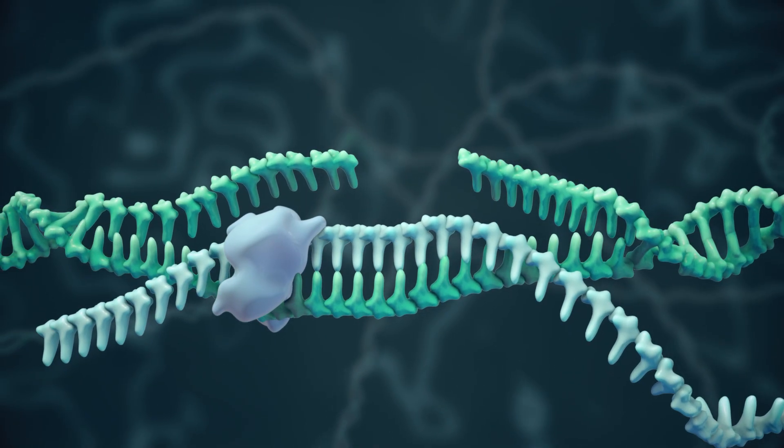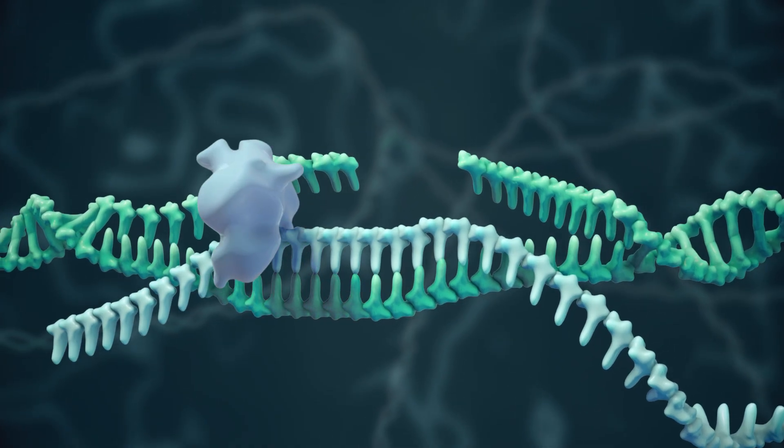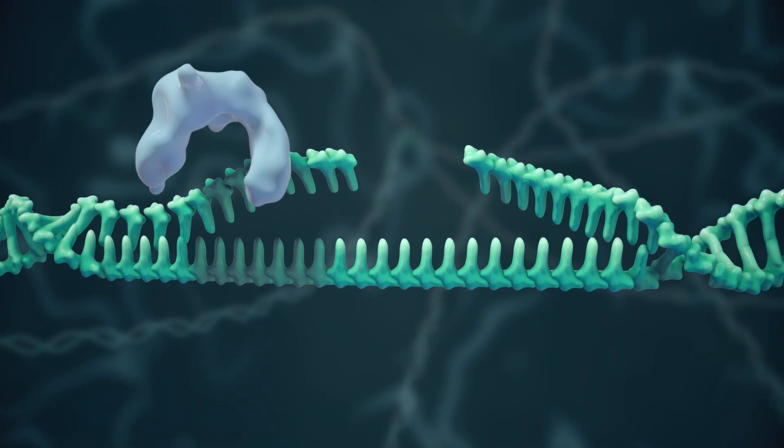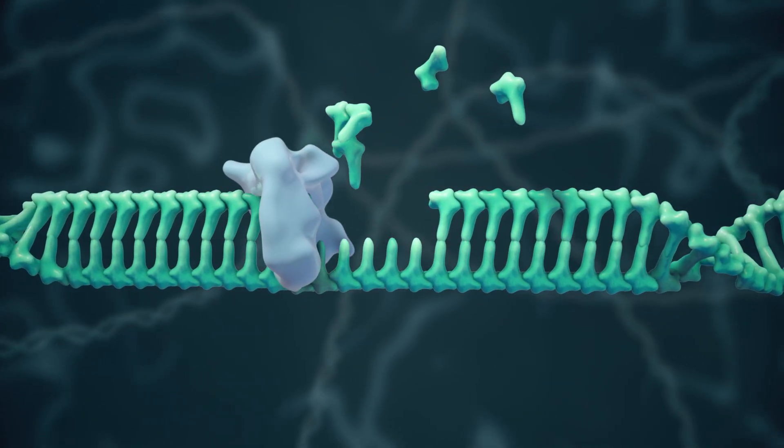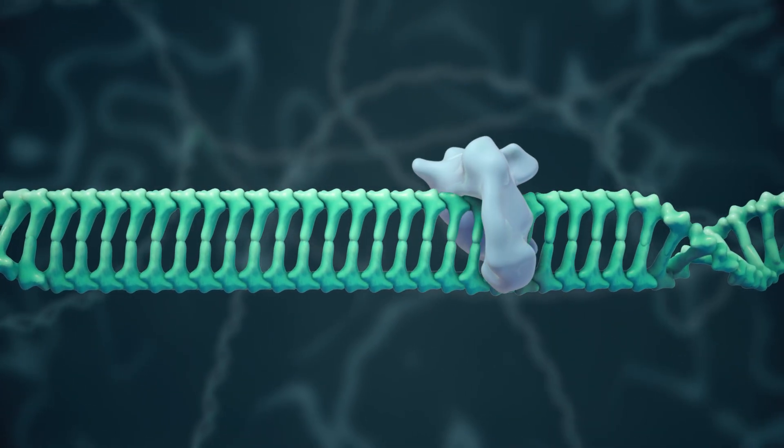Once the first strand has been repaired, the template falls away, and the other strand of DNA uses the repaired strand to fill in the remaining gap, leaving both strands with the corrected gene sequence.